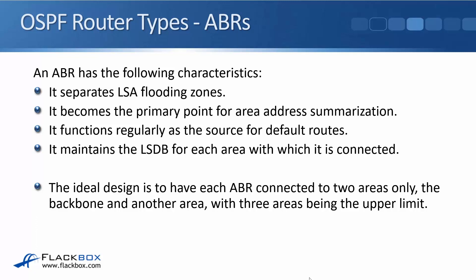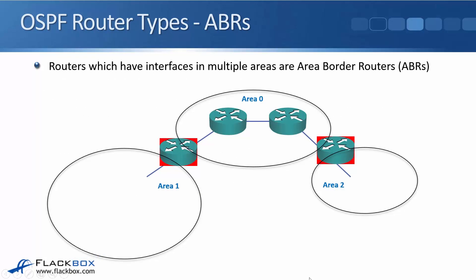The ABR is also where we always do our summarization in OSPF — summarization is always done on your ABRs. It functions as the source for default routes for other routers in normal areas, and it maintains the link state database for each area it is connected to. The ABR on the left has the full LSDB for area zero and for area one. The ABR on the right has the full LSDB for area zero and area two, but only summary information for area one.